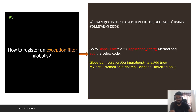The next question asks how to register an exception filter globally. Go to your global.asax file, and within the Application_Start method, add this code: GlobalConfiguration.Configuration.Filters.Add(), and within the brackets, create one instance of your exception filter class.